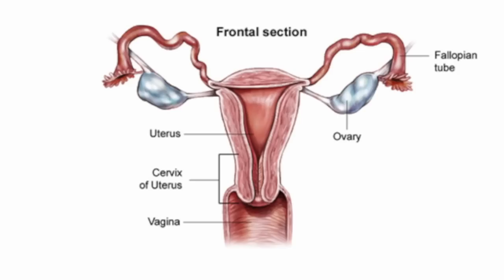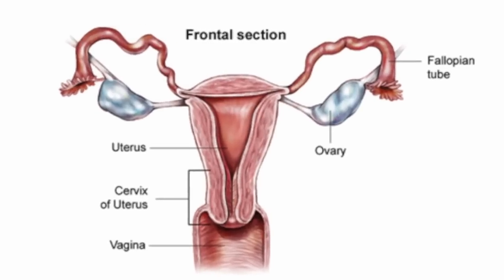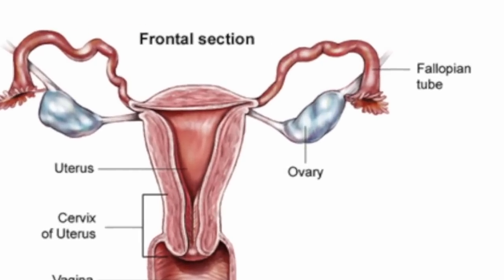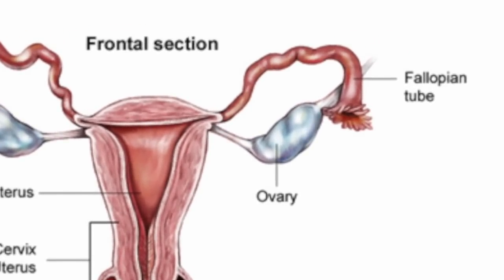Ovarian cancer is a tumor that affects the ovaries in women. The ovaries are the reproductive organs which produce eggs and hormones. We're actually learning that ovarian cancer may actually start in the tube adjacent to the ovary called the fallopian tube — the tube that carries the egg from the ovary to the uterus. This is important because as we learn about precursor lesions, or lesions that might lead to ovarian cancer, it may give us new strategies for treatment and even prevention.